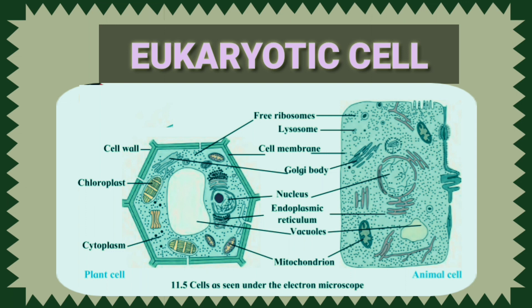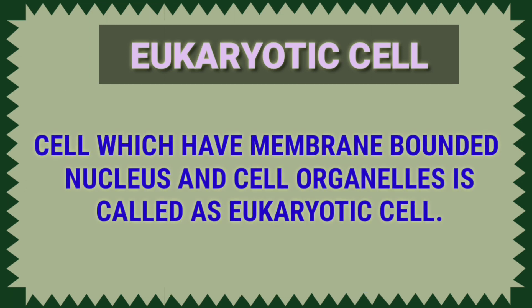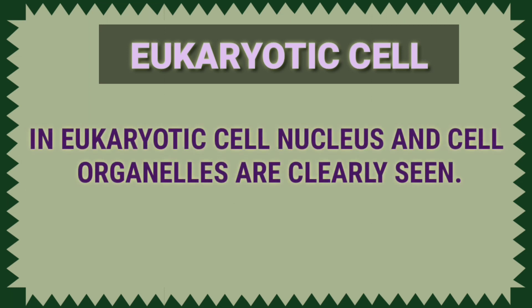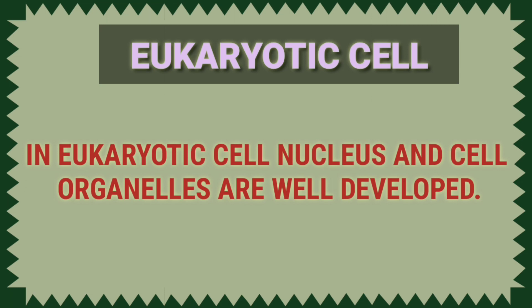Friends, now we learn about eukaryotic shell. Shell which have membrane-bounded nucleus and shell organelles is called as eukaryotic shell. Eukaryotic shell have well defined nucleus and shell organelles. In eukaryotic shell, nucleus and shell organelles are clearly visible and well developed.